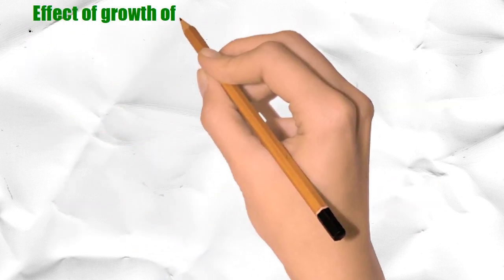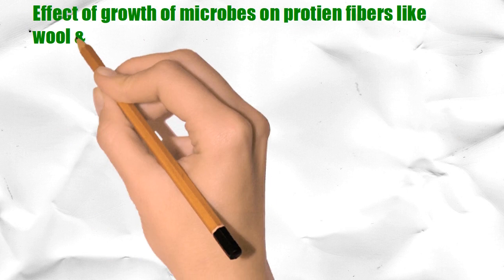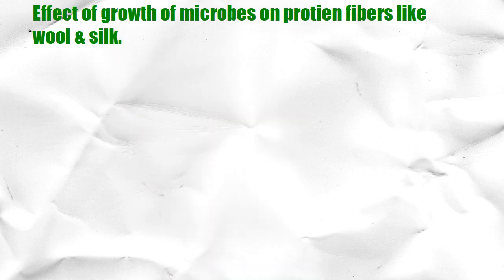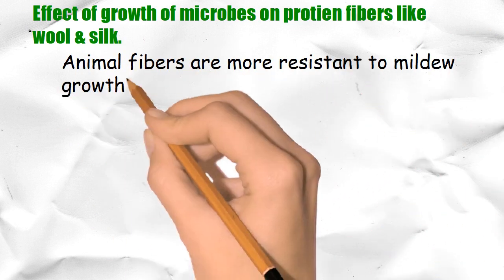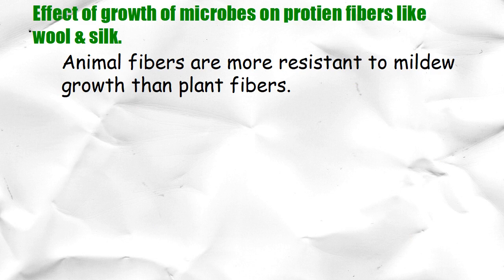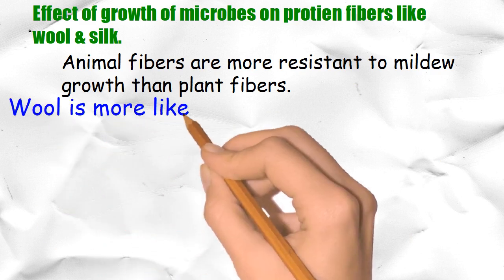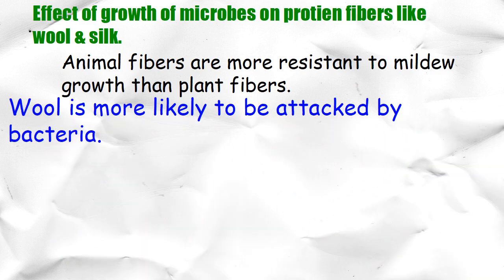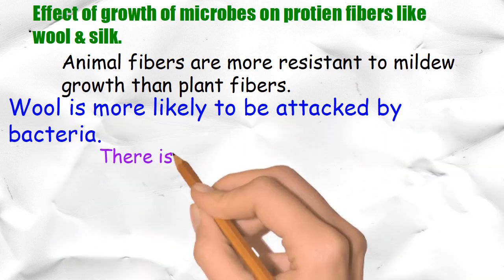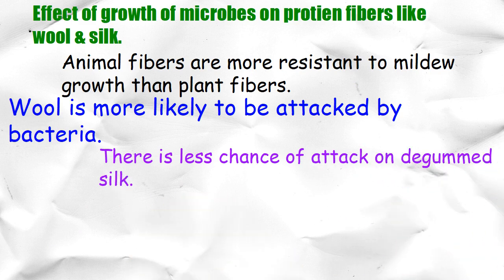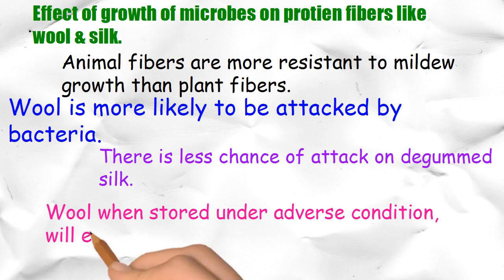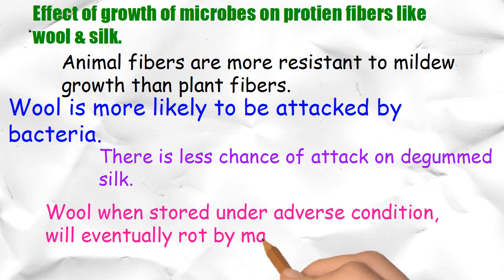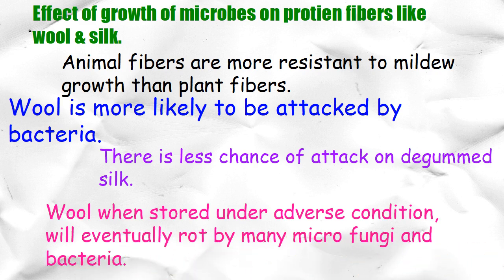Effective growth of microbes on protein fibers like wool and silk: animal fibers are more resistant to mildew growth than plant fibers. Wool is more likely to be attacked by bacteria, and there is less chance of attack on degummed silk. However, wool when stored under adverse conditions will eventually rot due to micro-fungi and bacteria.